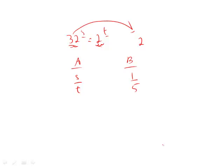How? Well, look at 32. 32 is the same as 2 to the fifth. So we have 2 to the fifth times s equals 2 to the t.